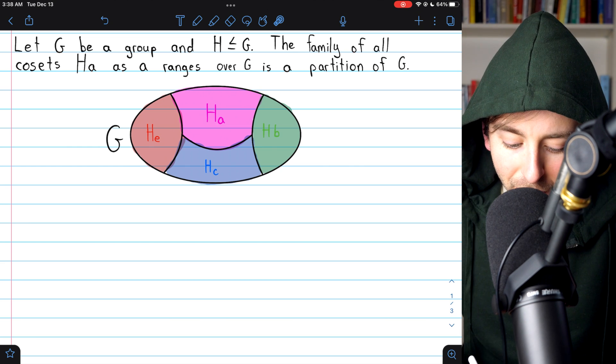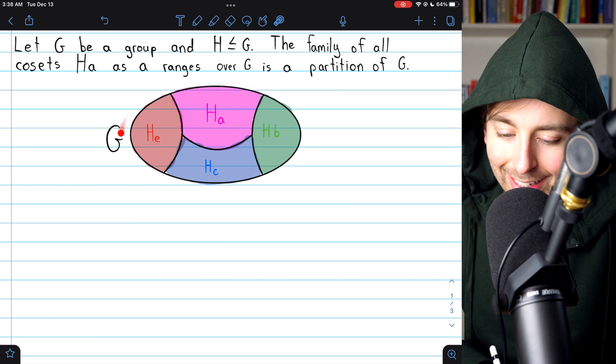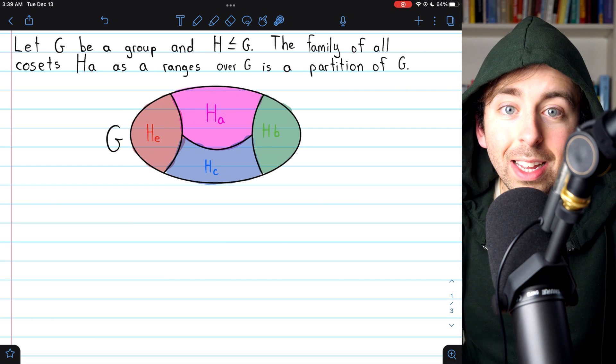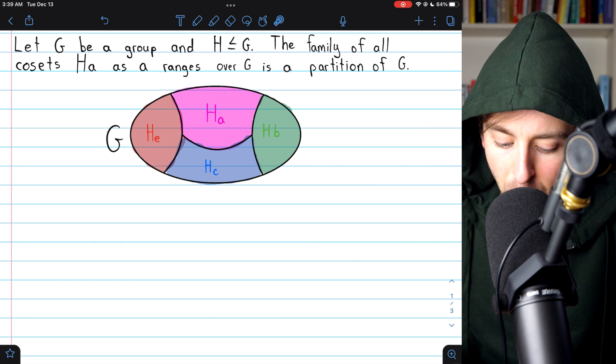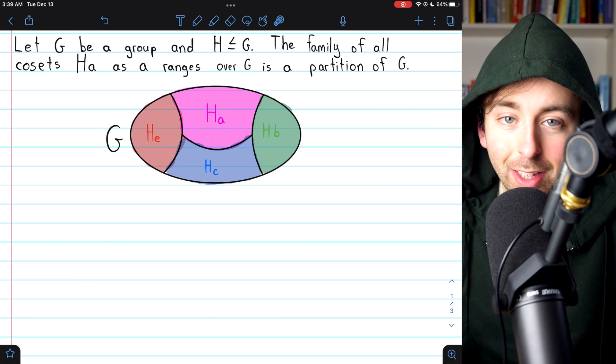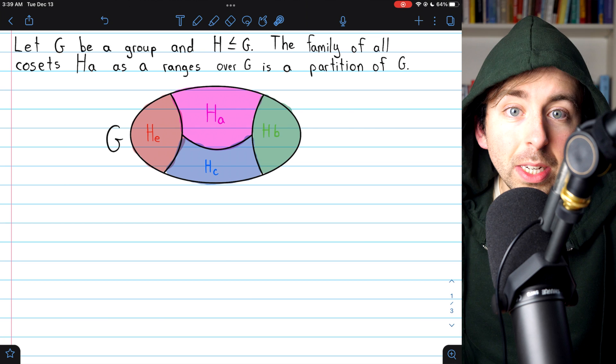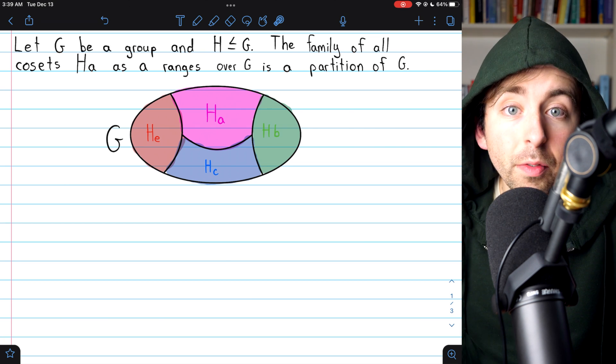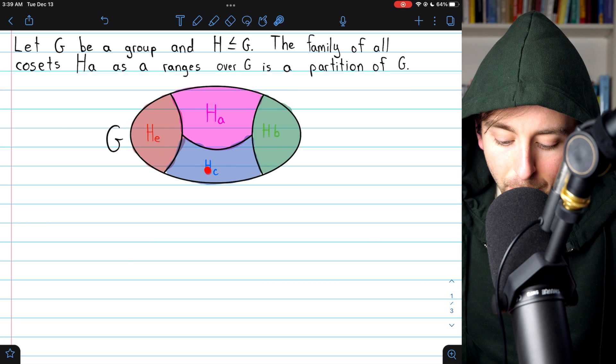Which means we have something like this going on. If the black ellipse is the group, and we have some subgroup H, the cosets of that subgroup will partition the group, so every element of the group belongs to one and only one of the cosets of any subgroup H.